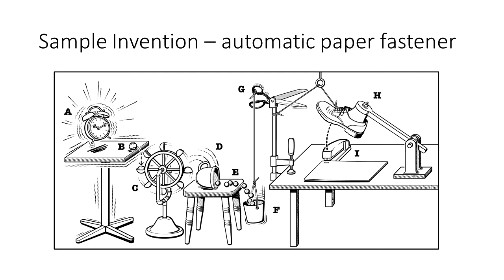Here is a sample invention for an automatic paper fastener. As you can see, at A on the left side, the vibrating alarm clock causes an object to roll off the table B and hit the ferris wheel C, causing a bunch of other stuff to happen until the bucket F gets heavy and causes the scissors G to cut that string, causing shoe H to hit the stapler I, which fastens the papers together.